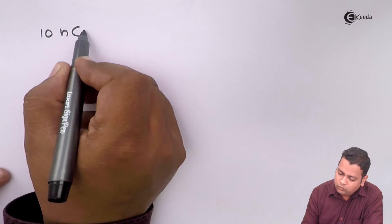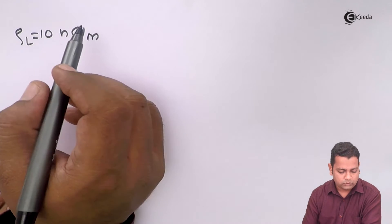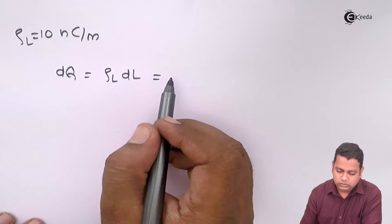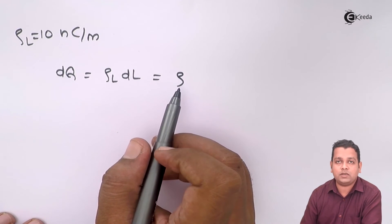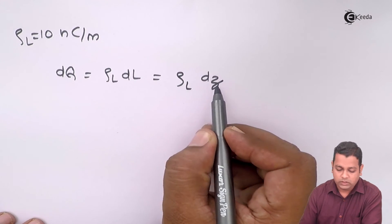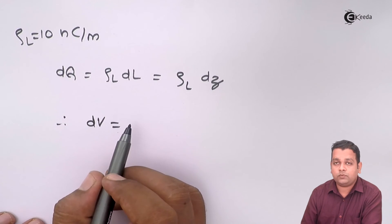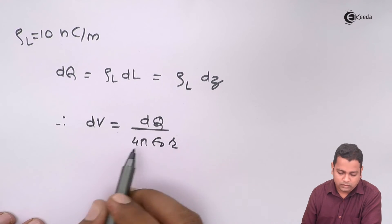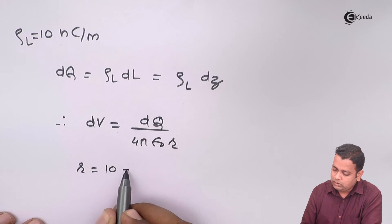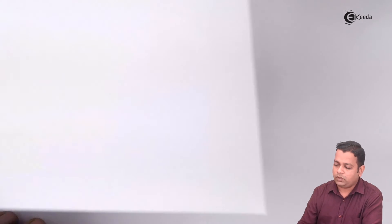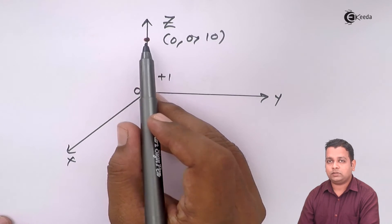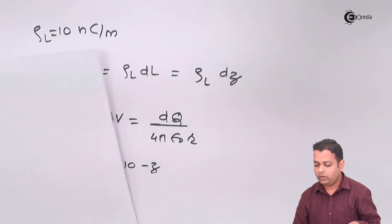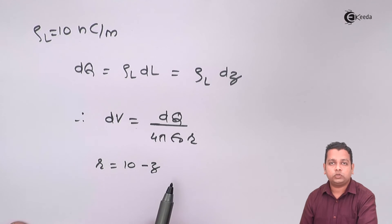For part C, we have 10 nanocoulombs per meter, denoted ρL. dQ = ρL · dL, and since the line extends along the z-axis from minus one to plus one, dL = dz, so dQ = ρL · dz. The differential potential dV = dQ / (4πε₀R). Here R = (10 − z), because the field point is at z = 10 and the source charge ranges from z = minus one to plus one. Hence R = 10 minus the z-value of the source charge.